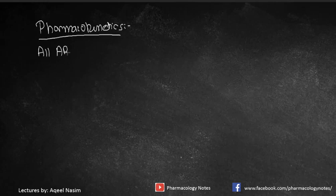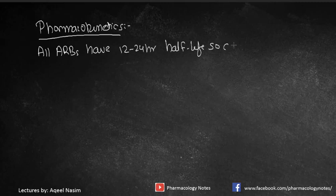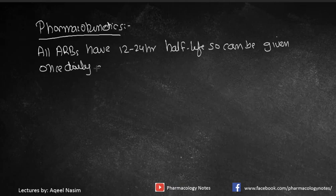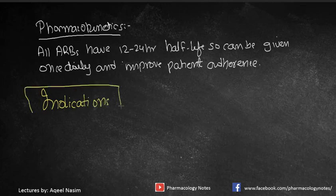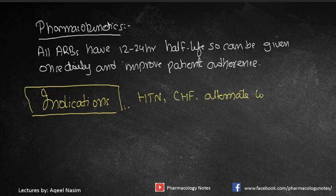The pharmacokinetic properties of ARBs include a 12 to 24-hour half-life, so they can be administered once daily. Once-daily dosing enhances patient adherence and compliance. Indications associated with ARBs include hypertension, congestive heart failure, and use as an alternative to ACE inhibitors for patients who do not tolerate dry cough.